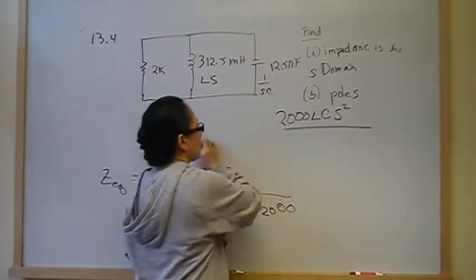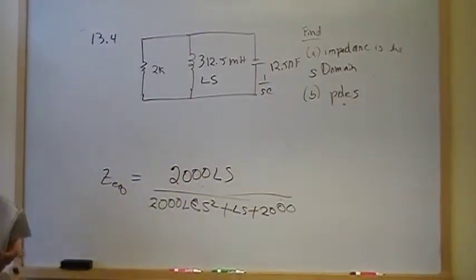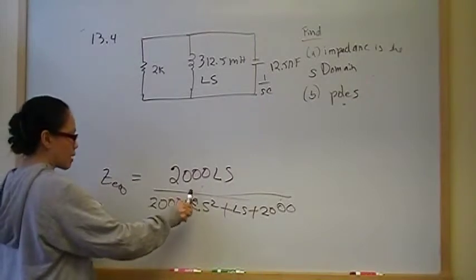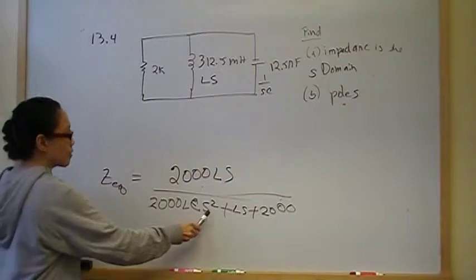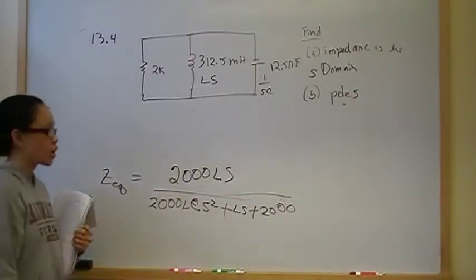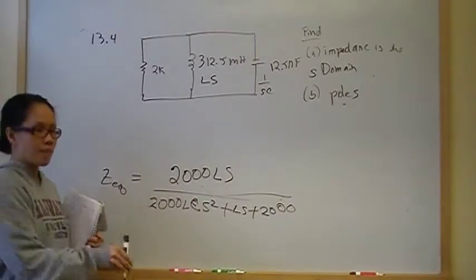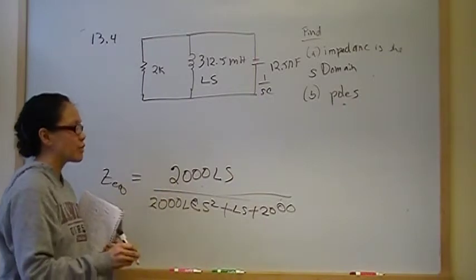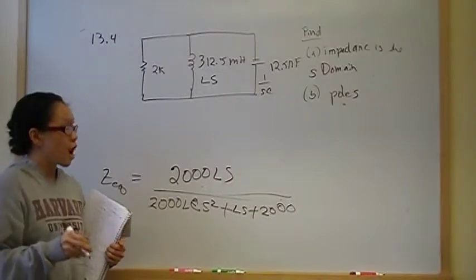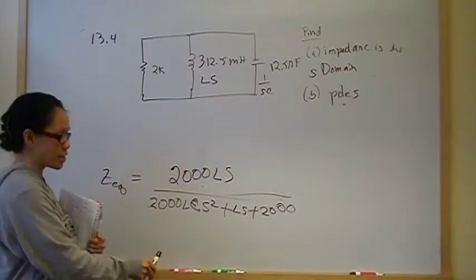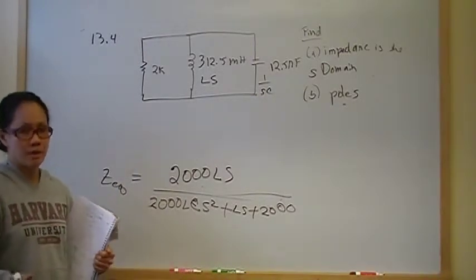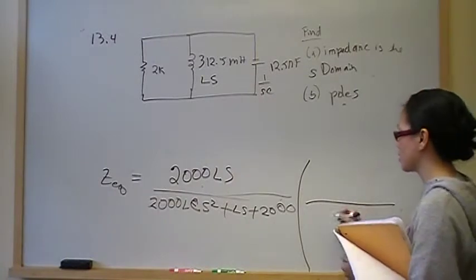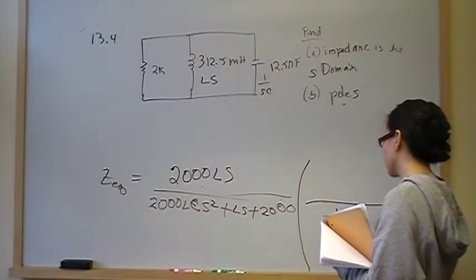Now, when we translate everything, we develop a really good habit of forcing the S squared coefficient to be one. To do that, I'm going to multiply both top and bottom by 1 over 2000LC. The reason is that all the tables for translating from the S domain back into the time domain have a one coefficient on S squared. We have to use that table, otherwise we get into complex systems of partial differential equations — and as much as I hate partial fraction expansion, it's much better than the alternative. So we multiply top and bottom by 1 over 2000LC, which is just multiplying by a special form of one.